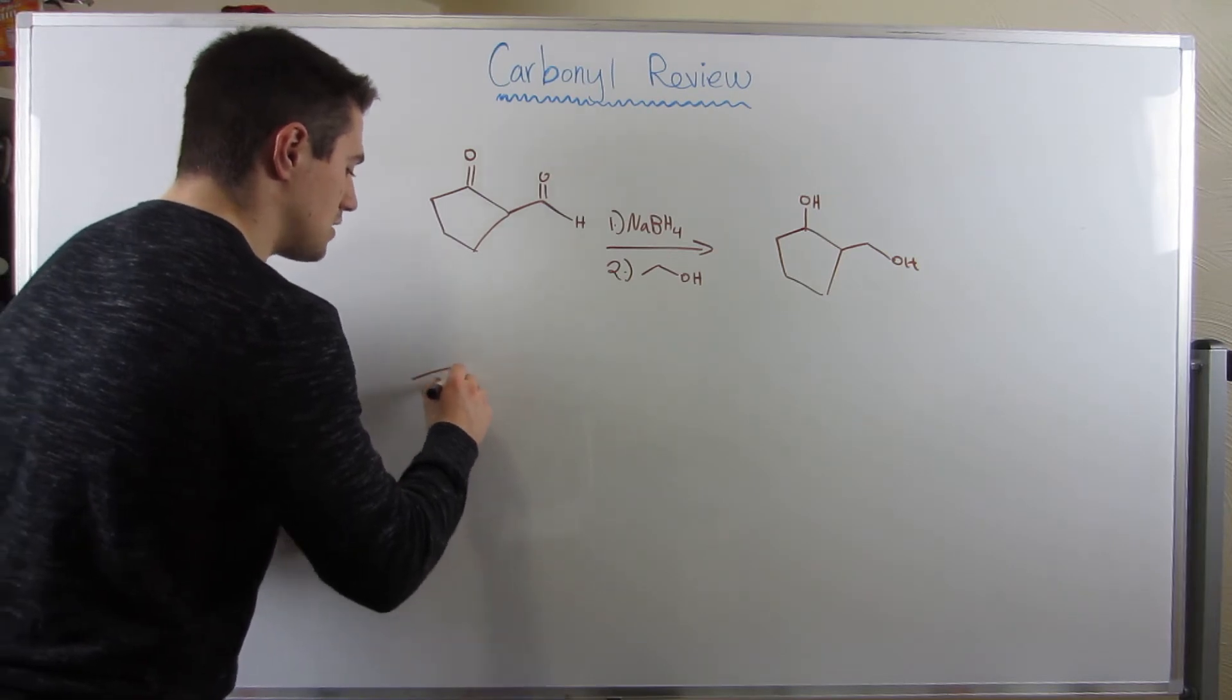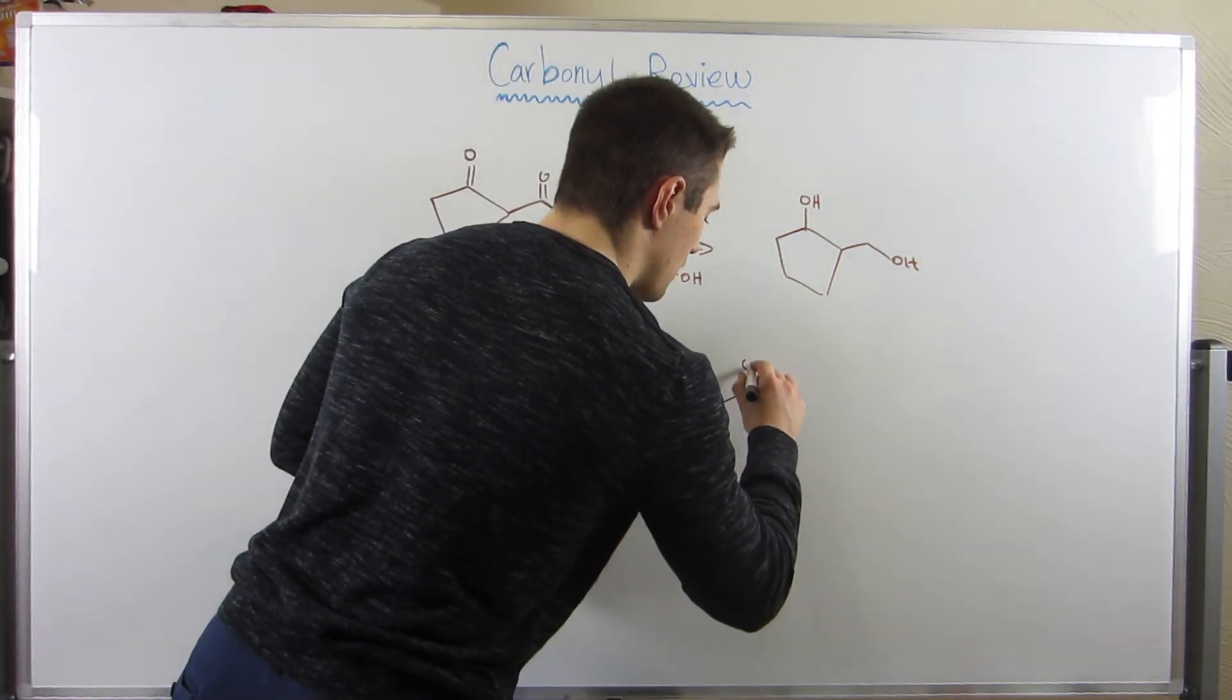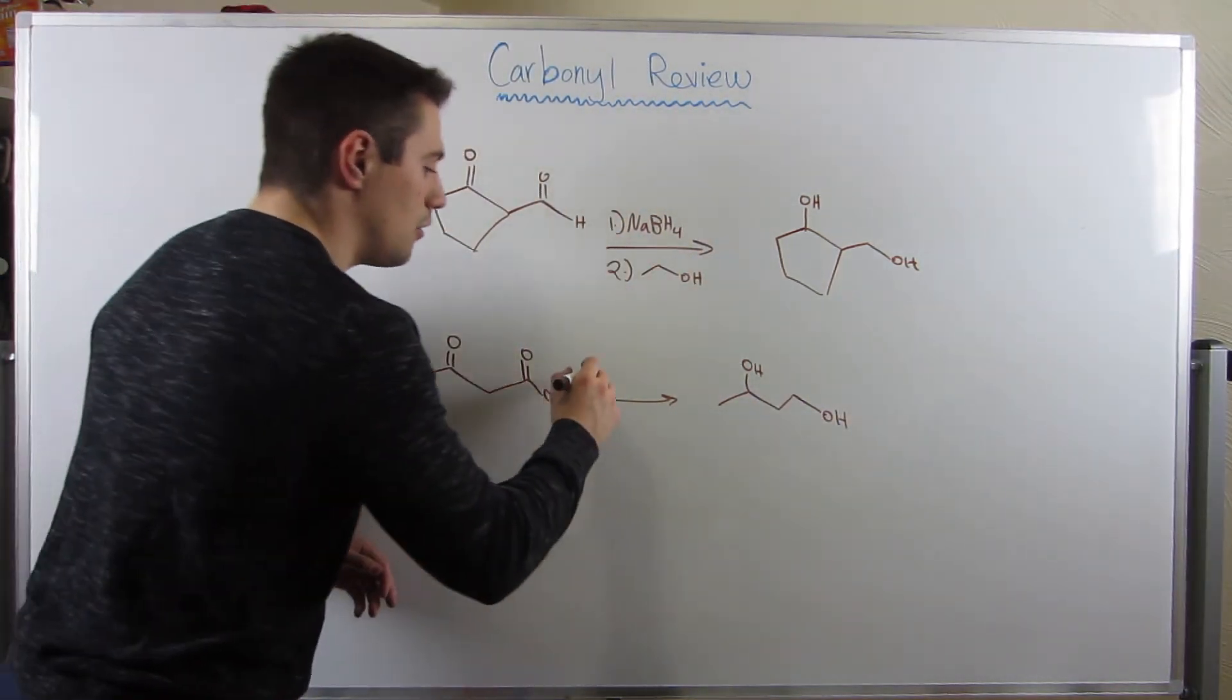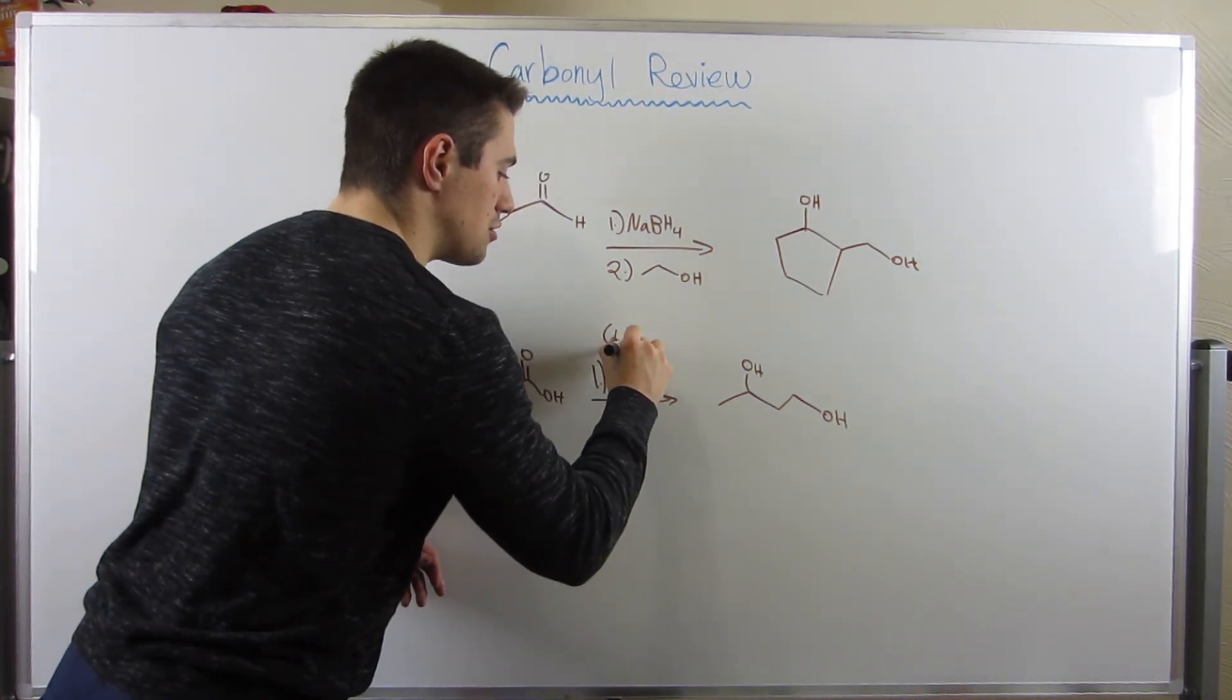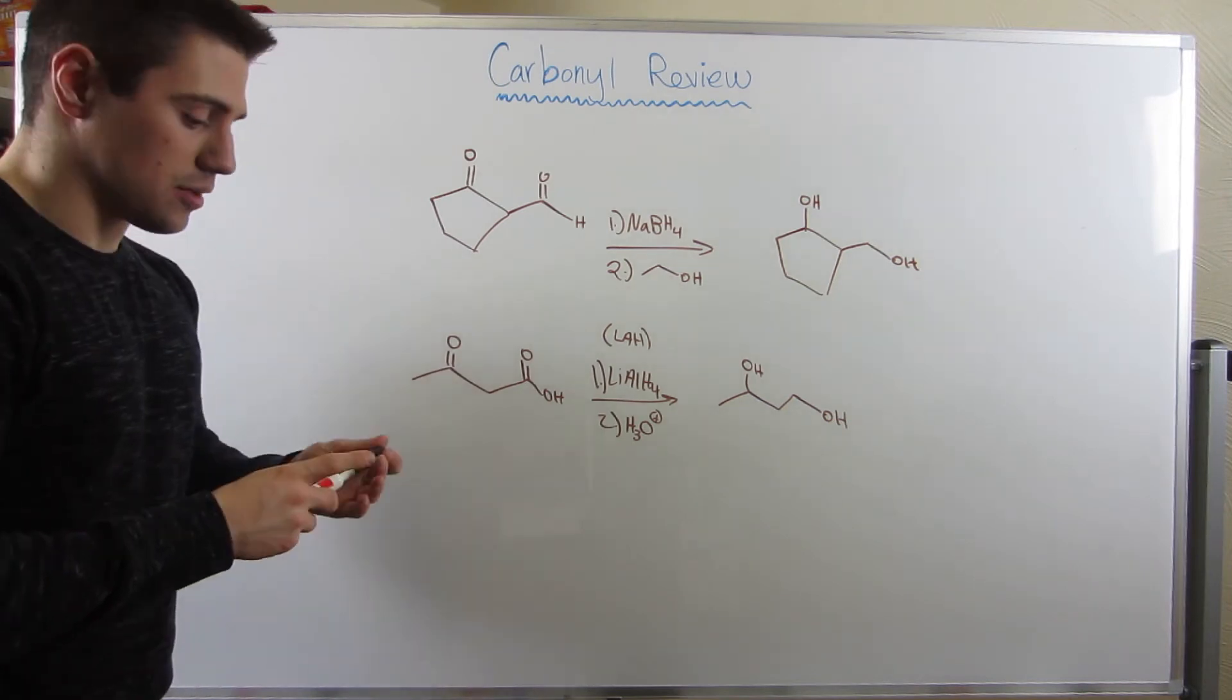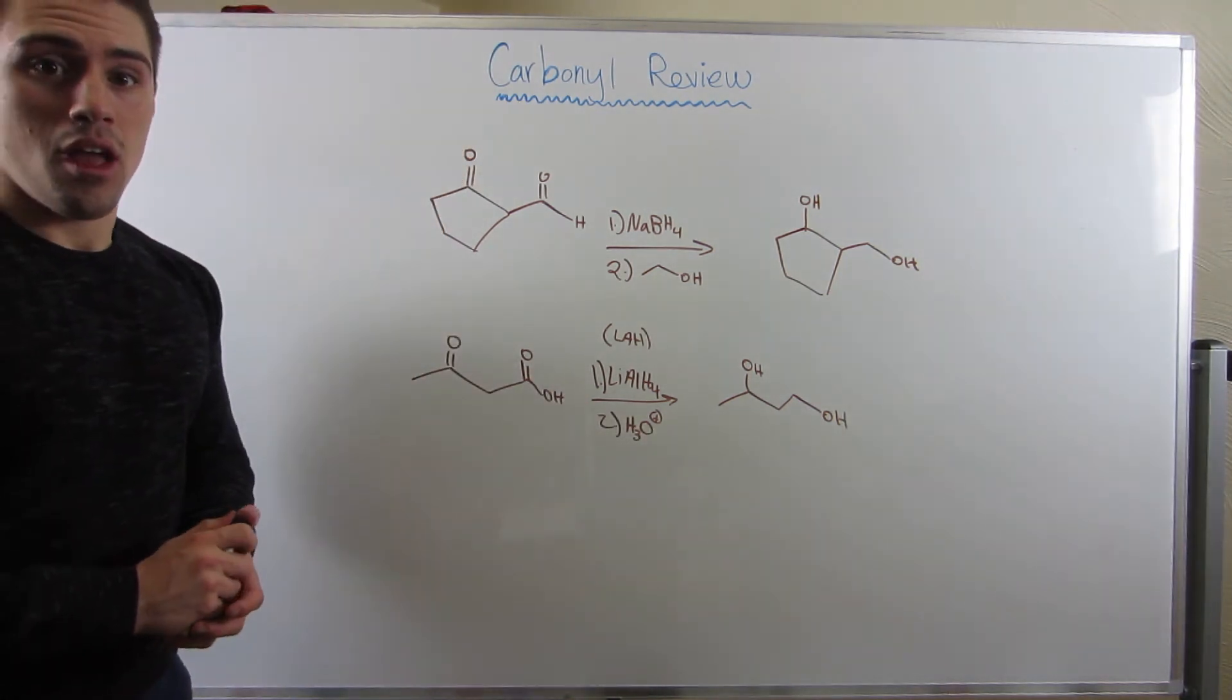So if I were to give you guys this again, and we wanted to make sure we could reduce all of this to alcohols, we wouldn't use the NABH4 and ethanol. We would instead use lithium aluminum hydride, or if you want to use the abbreviation, LAH, with a second step of acid. This is the much more aggressive reduction agent, right? He reduces almost anything. Actually, he does reduce everything. He will send this carboxylic acid back to an alcohol.